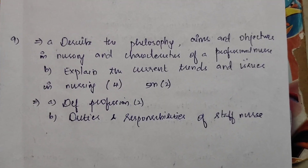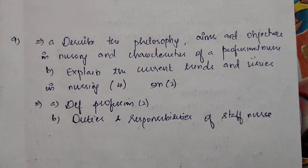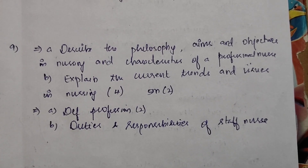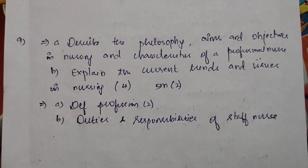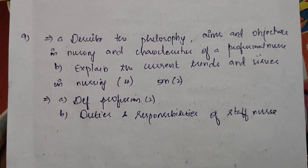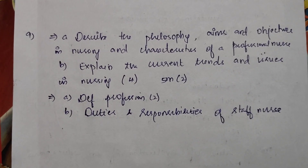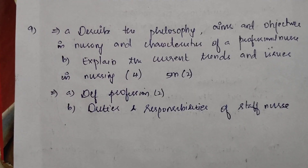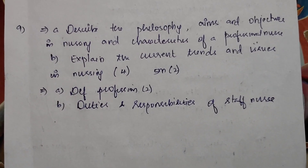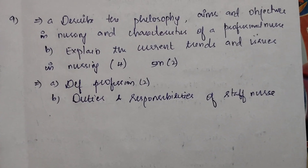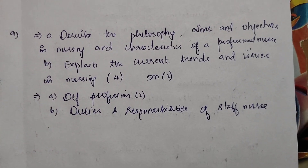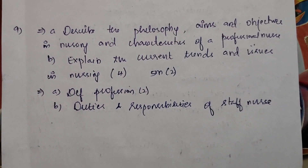Ninth question: describe the philosophy, aims and objectives in nursing and characteristics of a professional nurse. Explain the current trends and issues in nursing — this appears four times (15 marks and 5 marks twice). One important question. Next, define profession — two times. Duties and responsibilities of a staff nurse — one important question.